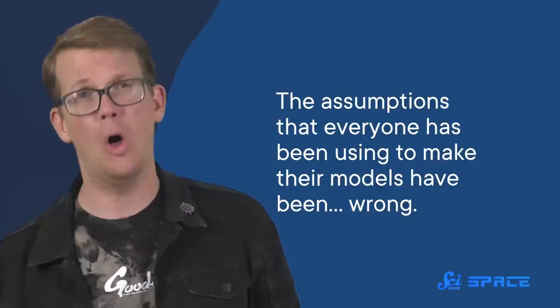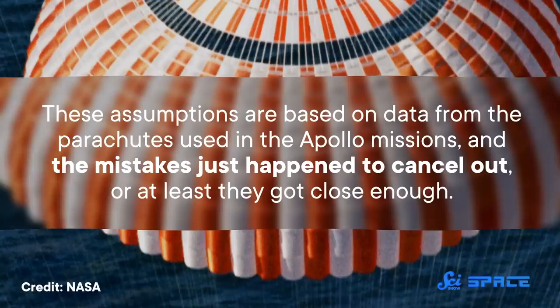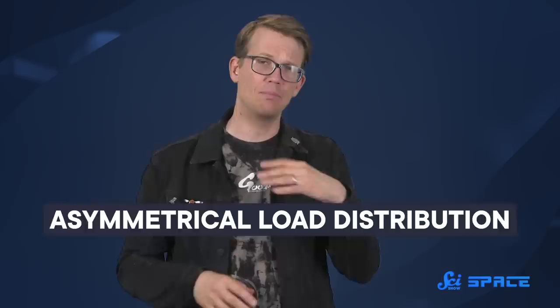Another thing is that the assumptions that everyone has been using to make their models have been wrong. For, like, a long time. Specifically, they were wrong about how much load the lines that connect the chutes to the spacecraft would experience. These assumptions are based on data from the parachutes used in the Apollo missions, and the mistakes just happened to cancel out, or at least they got close enough. But when using the same assumptions with different materials, you get something called asymmetrical load distribution. Basically, the parachute experiences different amounts of force over its area, so that it can't really inflate, which is bad.